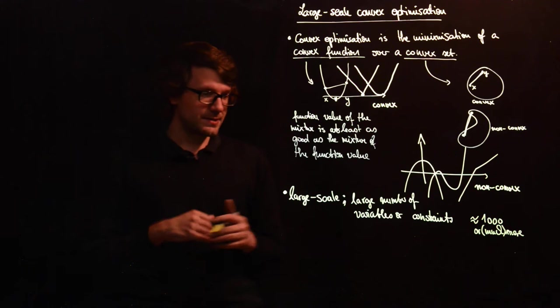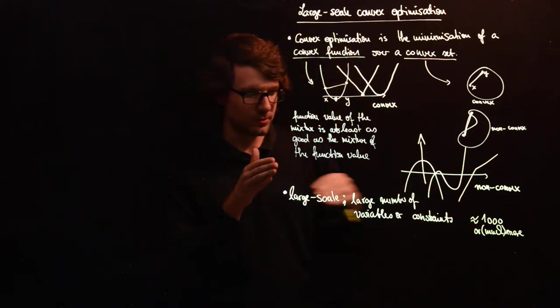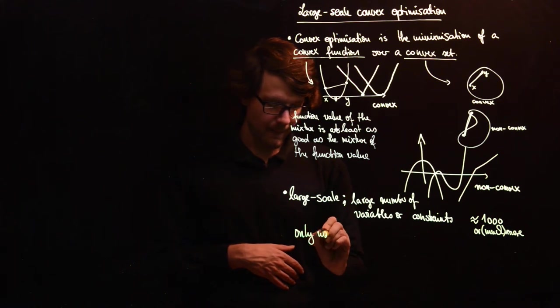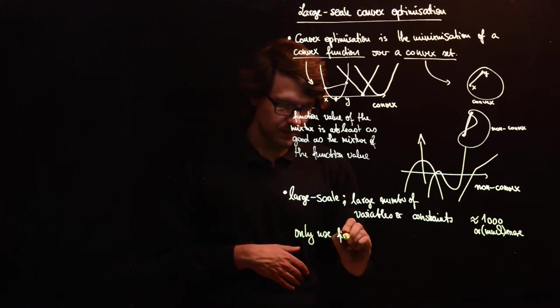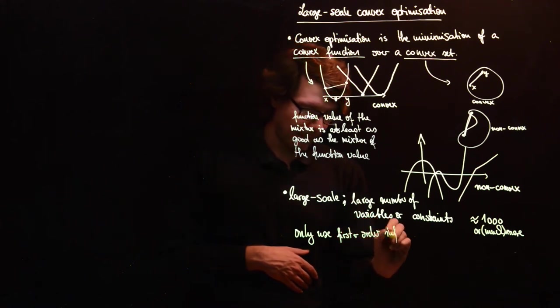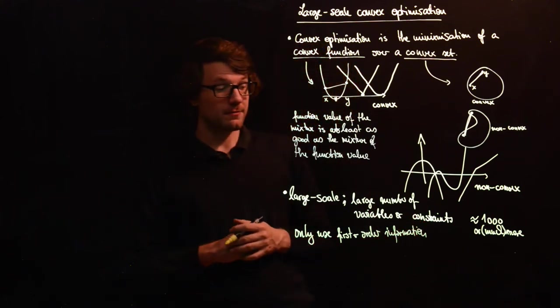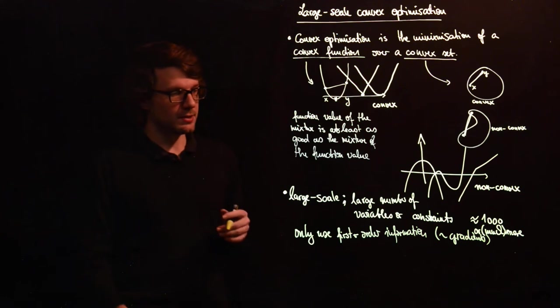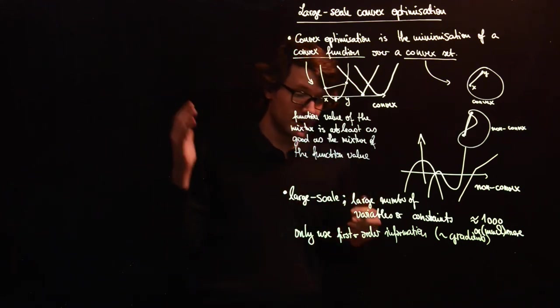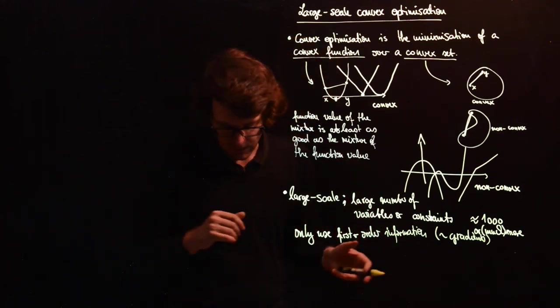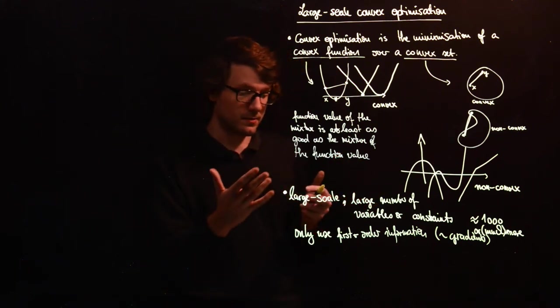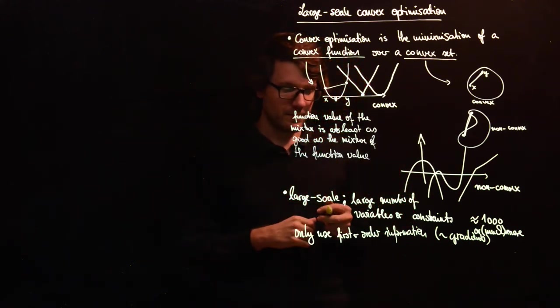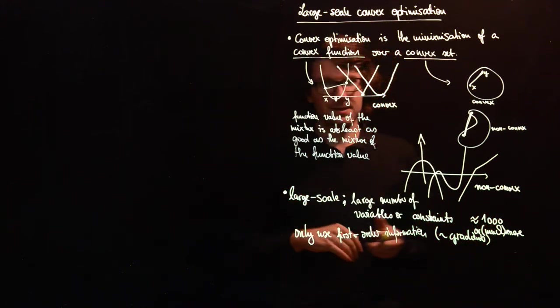So the reason why the number of variables matters is that you can only use first order information. First order information means something like gradients. What you usually cannot do is have large Hessians, so second derivatives, because these methods which use the second derivative, like the Newton method, which you might have heard of, they solve equations with this.